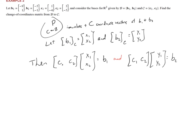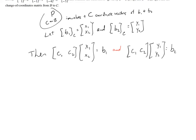The approach is to solve for x1, x2 and y1, y2 simultaneously by setting up an augmented matrix with c1 and c2 on the left of a dotted line, and b1 and b2 on the right. We reduce to reduced row echelon form — getting the identity on the left — and what's produced on the right are the x1, x2, y1, y2 solutions.